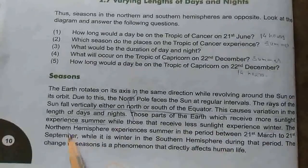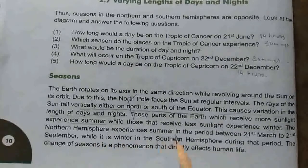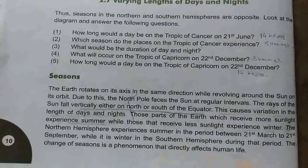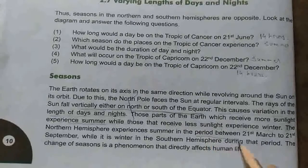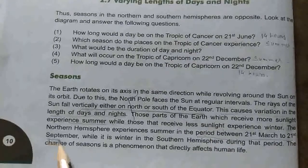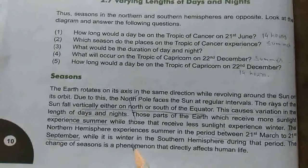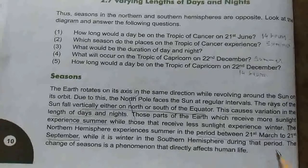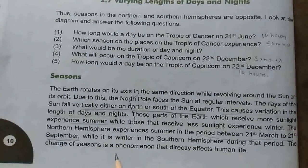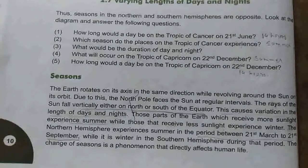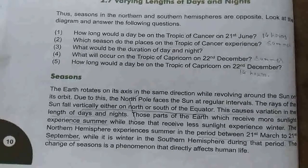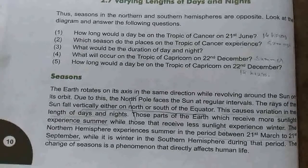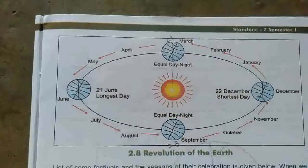The northern hemisphere experiences summer in the period between 21st March to 21st September, while it is winter in the southern hemisphere during that period. The change of season is a phenomenon that directly affects human life — it directly affects our lifestyle and habitation.